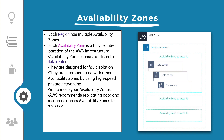Each data center can include hundreds of thousands of servers. They are fully isolated partitions of the AWS global infrastructure. All availability zones are interconnected with high bandwidth, low latency networking over a fully redundant private network.